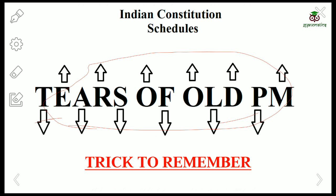The second schedule covers Emoluments — salaries and emoluments. E will stand for Emoluments. Salaries and emoluments include the President, State Governors, the CAG, Supreme Court and High Court Judges, the Deputy Speaker and Speaker, the Chairman and Deputy Chairman, and the State Legislature Speaker and Deputy Speaker. All salaries and emoluments come under the second schedule.